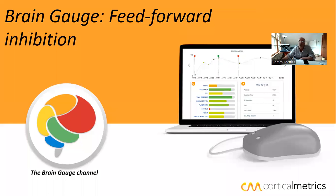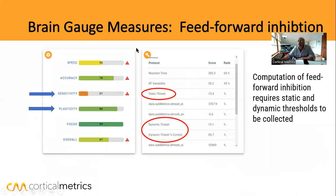Greetings. Welcome to the Brain Gauge channel. This Brain Gauge metric is called the feed forward inhibition metric, or feed forward inhibition. It is computed from a couple of different measures — specifically, static threshold and dynamic threshold.